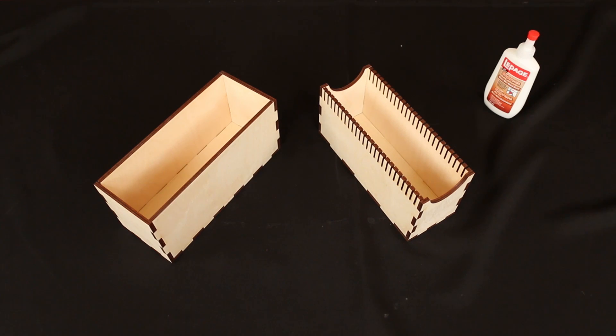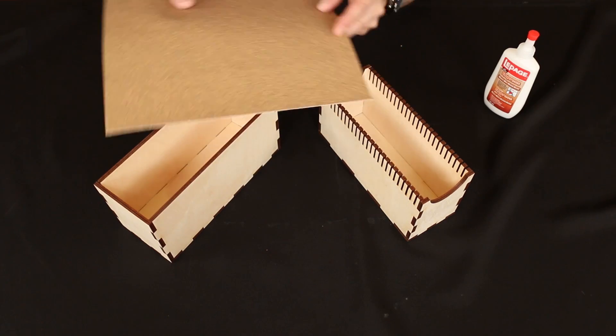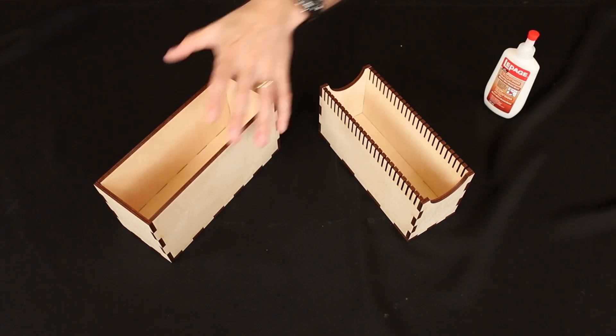One thing I did fail to mention, though, is you're going to want to have some sandpaper on hand as well. I recommend 220 grit, and you're going to want to sand the sides of these panels. I'll show you why.